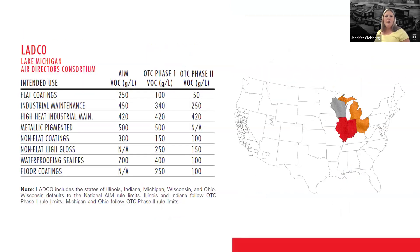Another air district is LADCO — the Lake Michigan Air Directors Consortium. Illinois, Indiana, Michigan, Wisconsin, and Ohio are all within LADCO. Illinois and Indiana follow OTC phase one, whereas Michigan and Ohio follow OTC phase two. Wisconsin defaults to the national AIM. So you have a little bit of all of that — it's just making sure you know where your project is and what the VOC limits and requirements are.